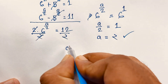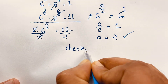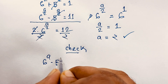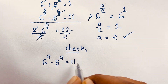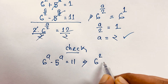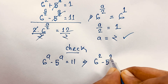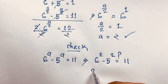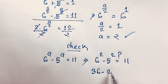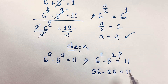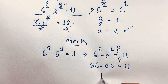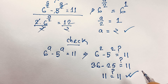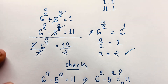Let's verify: our question is 6 to the power a minus 5 to the power a equals 11. With a equal to 2, we get 6 squared minus 5 squared, which is 36 minus 25, which equals 11. So the left-hand side equals the right-hand side — verified!